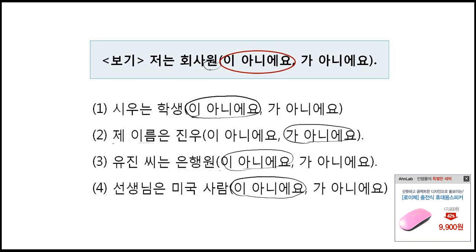Can you understand the three grammatical factors? They are 이에요 and 예요, 은/는, and 이가 아니에요. 끝. Thank you.